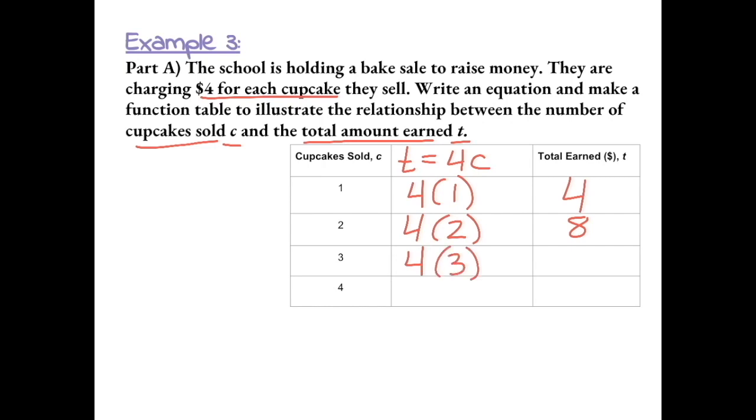If they sold 3 cupcakes at $4 each, they would have earned $12. And if they sold 4 cupcakes at $4 each, they would have earned $16.